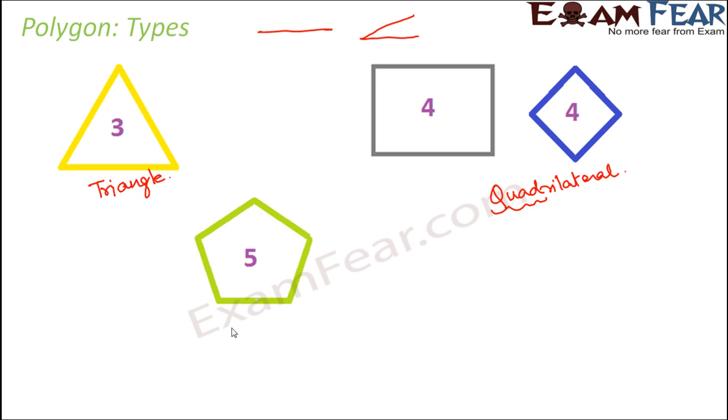Polygon with five sides, they are called pentagon. Penta means five. So five sides, pentagon. Six sides. Six is hexa. So this is hexagon.